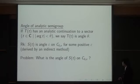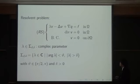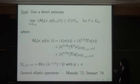We prove the angle is pi/2, as it is on Lp. Let us give a direct proof for this analyticity result by considering the resolvent problem. Lambda is a complex parameter, and sigma(theta, delta) is a sector in the complex plane with angle theta between pi/2 and pi, and delta some positive constant, with |lambda| greater than delta. Here is our goal: we estimate the sup-norm of the resolvent by the sup-norm of external force F. The capital M_p norm is for the solution up to second derivatives.